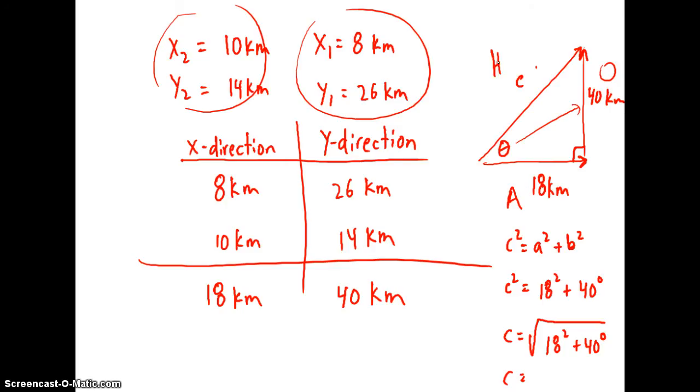So I can use tan of the angle equals opposite over adjacent. Where my opposite side is going to be 40, my adjacent side is 18. So I'm going to finish up on the next page and show you the final answer.